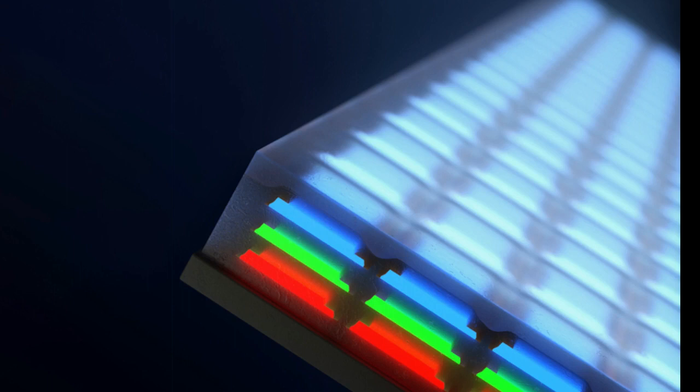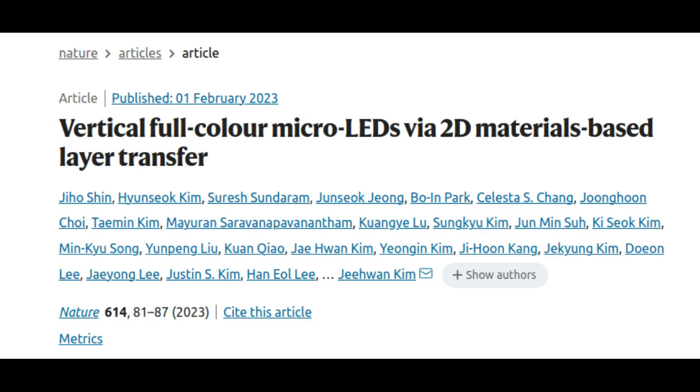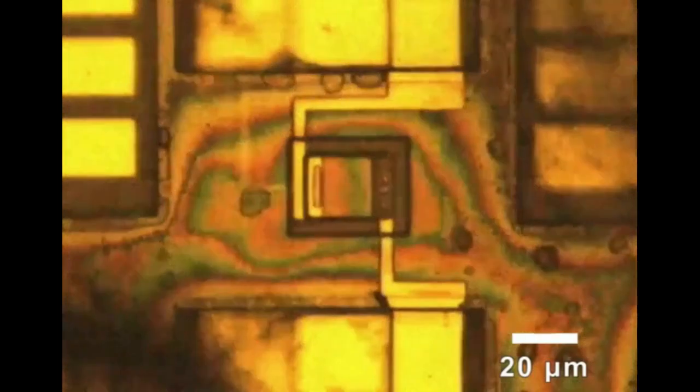Now, MIT engineers have developed a new way to make sharper, defect-free displays. Instead of patterning red, green, and blue light-emitting diodes side by side in a horizontal patchwork, the team has invented a way to stack the diodes to create vertical multicolored pixels.